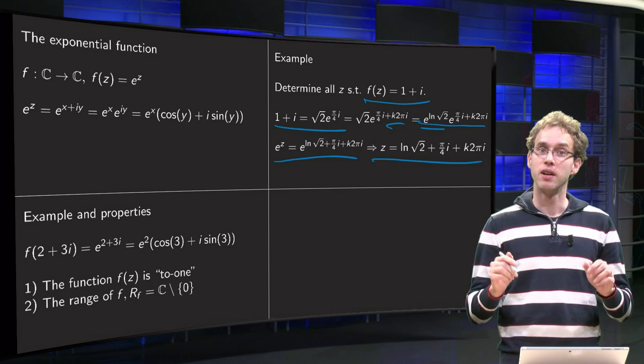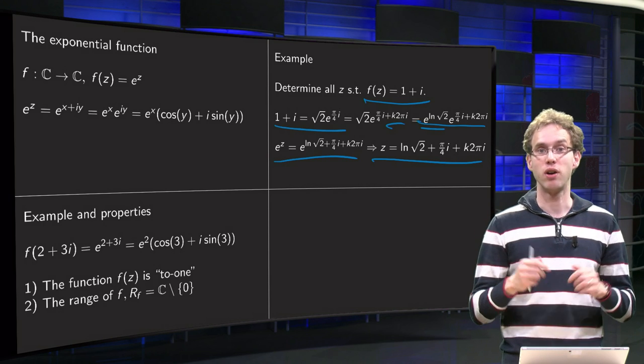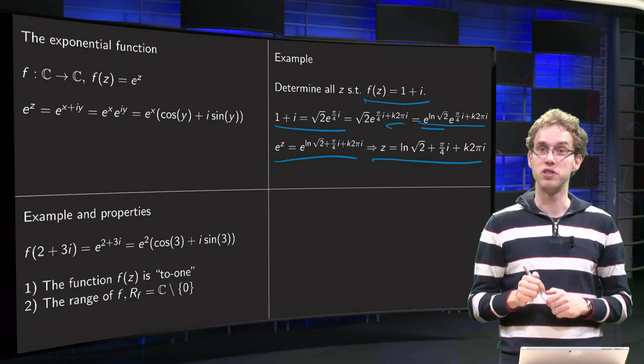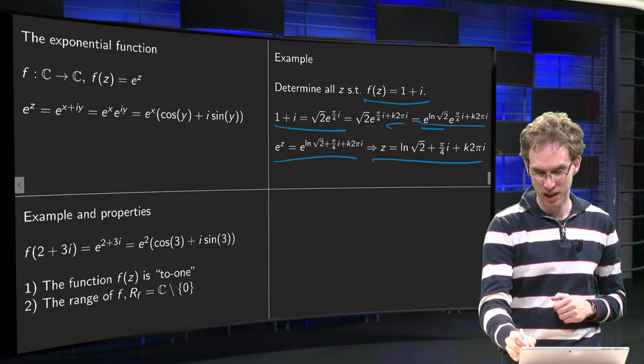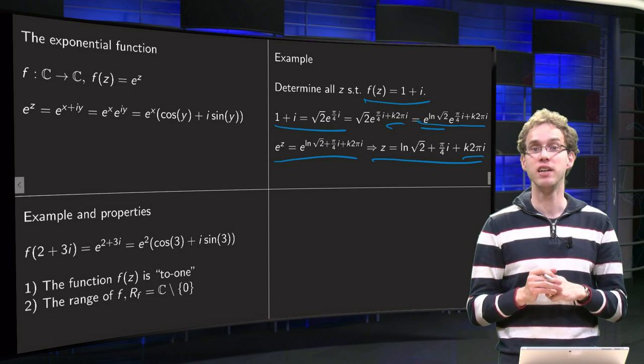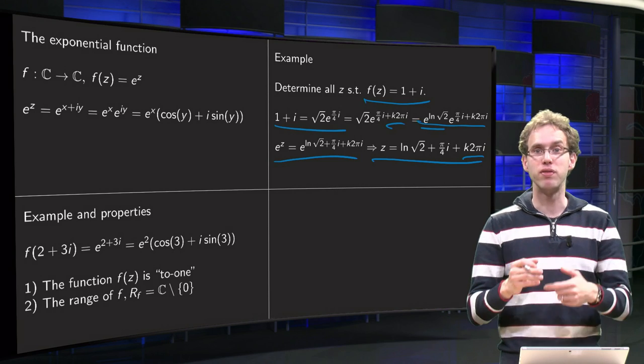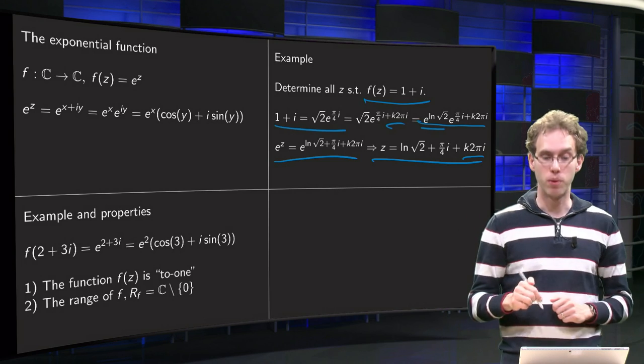So what we see is that many different values of z are all mapped to the same 1 plus i, because you have this k times 2π. You can take k arbitrarily, so you have many different values of z mapped to the same 1 plus i.